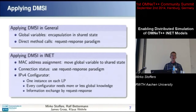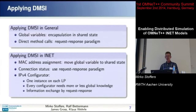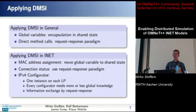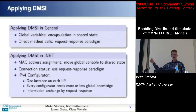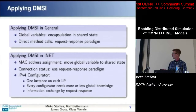This allows us to solve the first two requirements for distributed simulation. For the global variables requirement, you can encapsulate global variables into the state: use a local variable in your initialization function, write it into the state, return it to the core so it can transmit this global variable to the next module. Then you modify it, put it back into the state, so that every module can access it just as it would in sequential simulation. Similarly, it works for direct method calls.